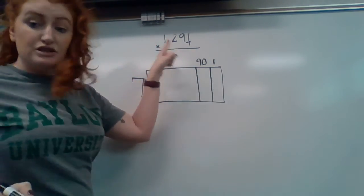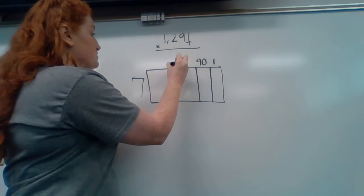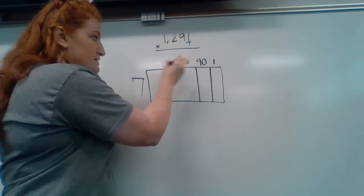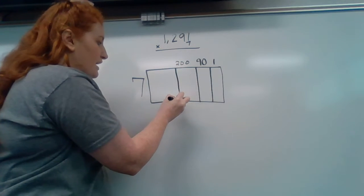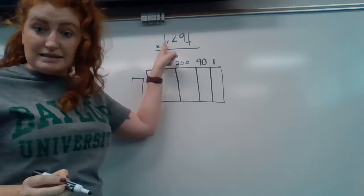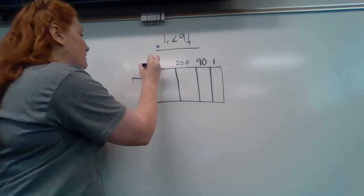And then my next box is a two in the hundreds place, which is going to be 200, which means my box compared to the 90 is going to be slightly bigger. And then our last one is a one in the thousands place, which is 1000.